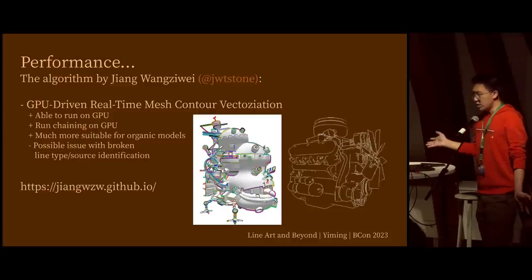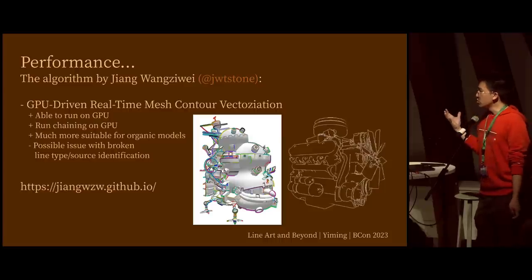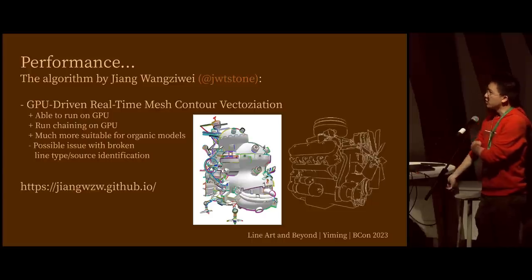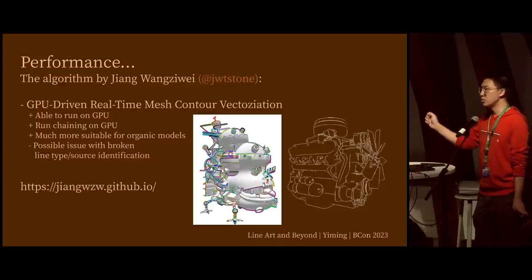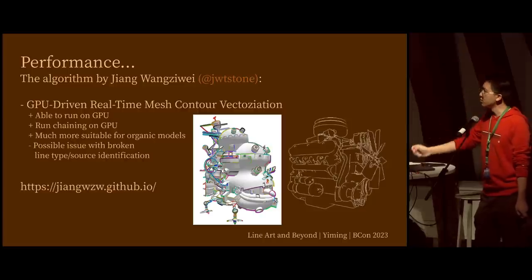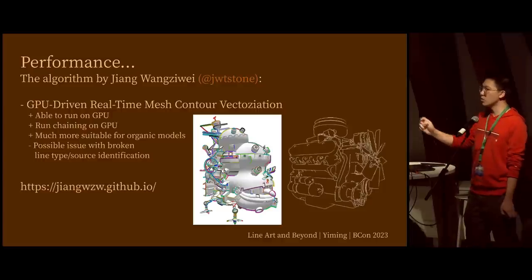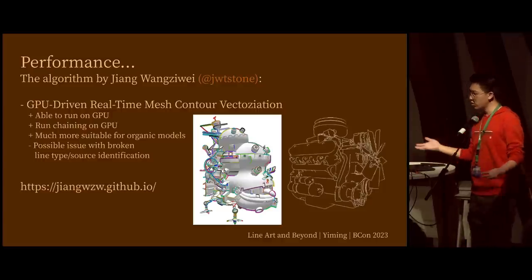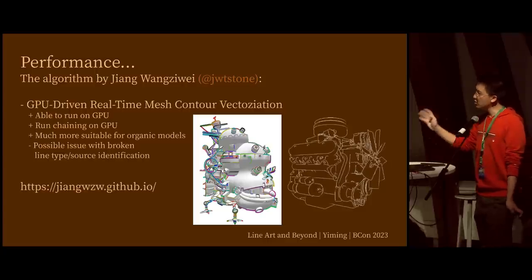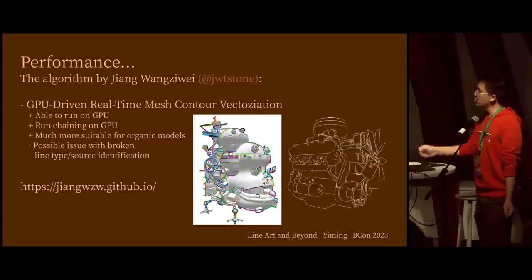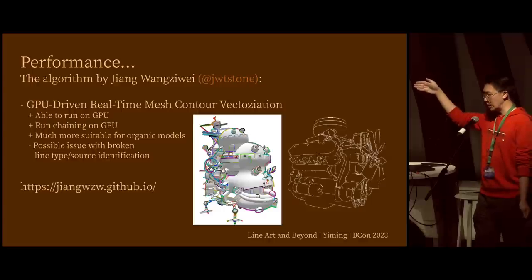I'd also give a shout-out to a newer, fully GPU line art algorithm. It does all the tracing on the GPU, even all the chaining on the GPU, which is much more suited for organic models. The downside is that unlike the current line art where you can filter lines by collection or object, this image-tracing-style algorithm won't be able to do that. But for a uniformly styled image it's probably more suited, and it's faster. You can check out that work at the URL shown.